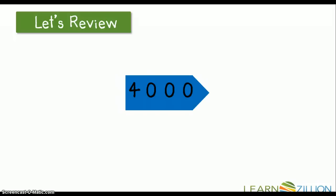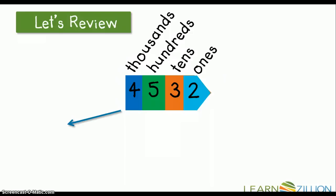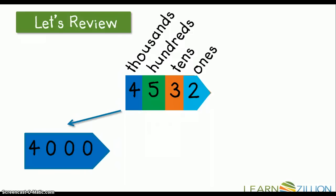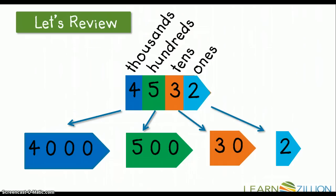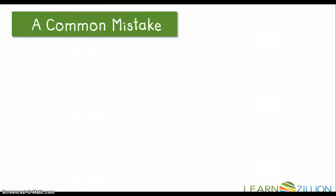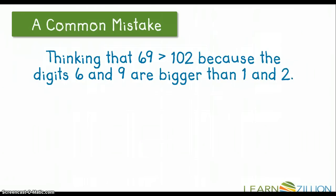Let's also review the importance of understanding a digit's value based on where it is in a number. In the number 4,532, the 4 is in the thousands place, the 5 is in the hundreds place, the 3 is in the tens place, and the 2 is in the ones place. That 4 in the thousands place has a value of 4,000; the 5 has a value of 500; the 3 has a value of 30; and the 2 has a value of 2. A common mistake that many students make is thinking that 69 is greater than 102 because the digits 6 and 9 are bigger than 1 and 2.